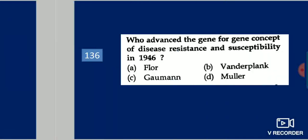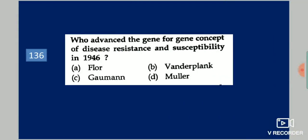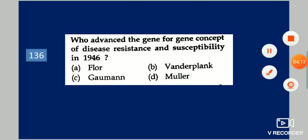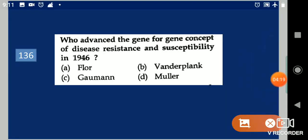Next question: Who advanced the gene-for-gene concept of disease resistance and susceptibility in 1946? Your options are: Flor, Vanderplank, Gaumann, Muller. Your answer is Flor.